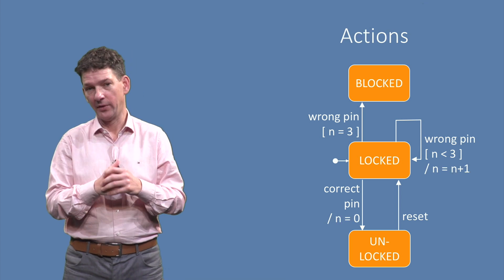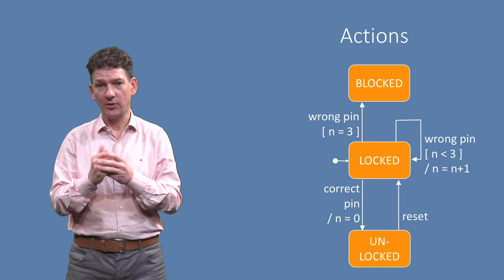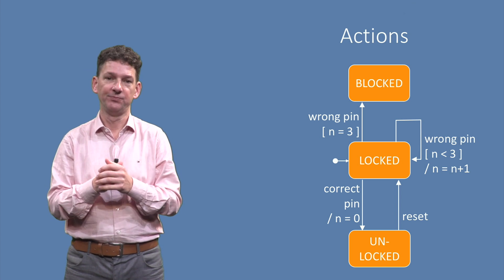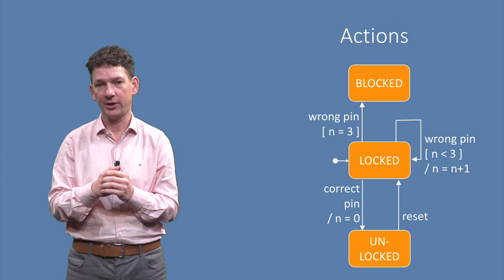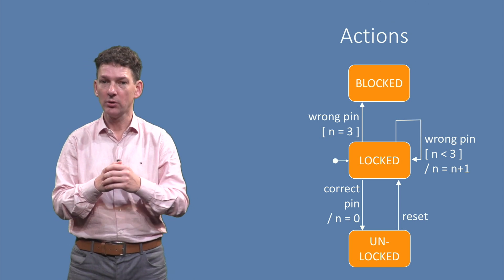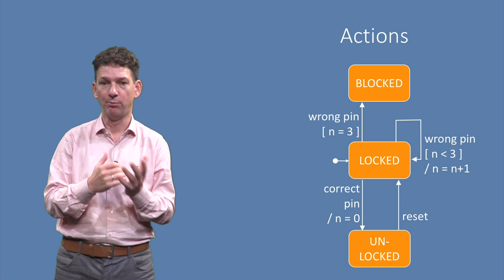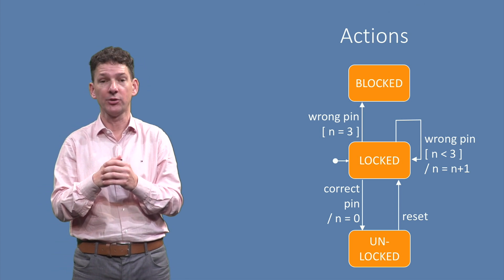Yet another convention of the UML is that transitions can have actions. These are denoted by a forward slash, followed by the action. In our example, we have added two actions, both manipulating the attempt counter n.